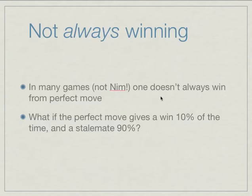In many games, not Nim, one doesn't always win from a perfect move. What if the perfect move gives a win 10% of the time and stalemate 90% of the time? You still want to be able to do the perfect move. And so the Skittles agent doesn't deal with that at all.